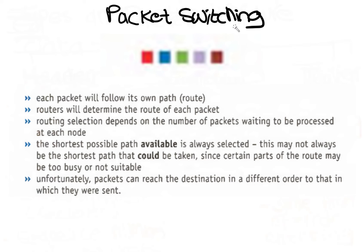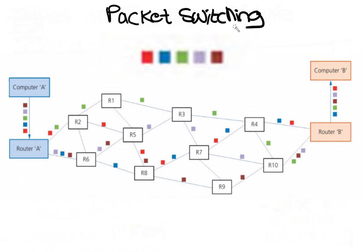Unfortunately, packets can reach the destination in a different order to that in which they were sent. This figure shows one possible scenario. Notice the different paths taken by each packet from computer A to computer B, and also notice that the packets have arrived in a different order compared to the way they were sent.